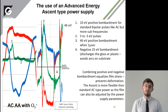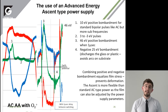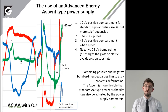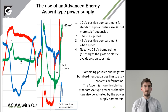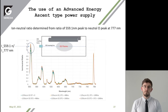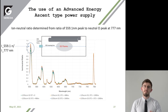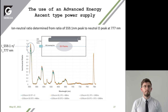Looking at the AE Ascent power supply from the perspective of optical emission, we can look at the optical emission for a specific power and play around with these parameters — see what happens if we change the dead time, what happens to the ion-to-neutral ratio. We've normalized our spectra to the 777 peak, and then looking at the most intense peak, which is 559.1 nanometre wavelength for O₂⁺.